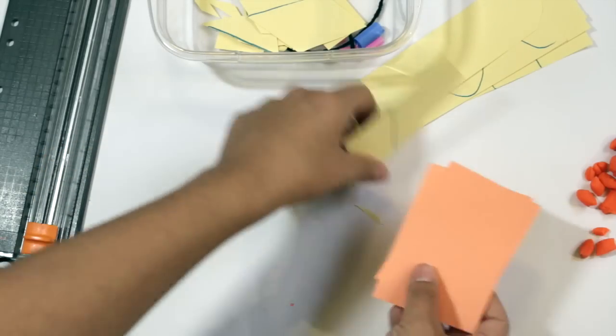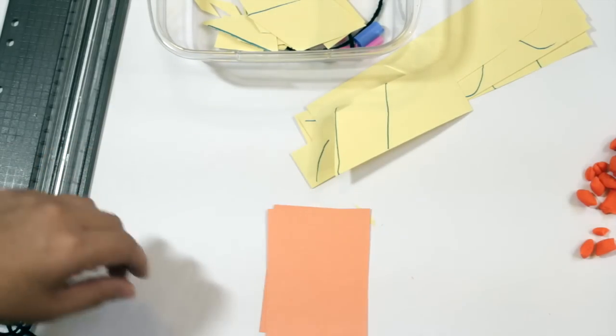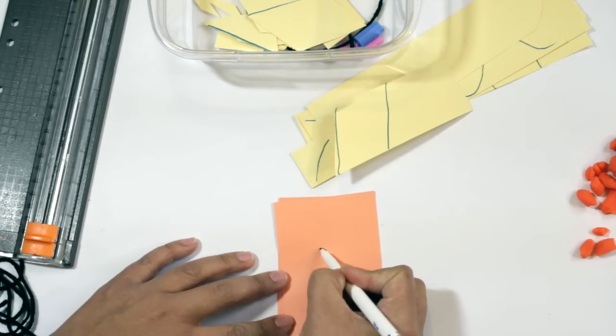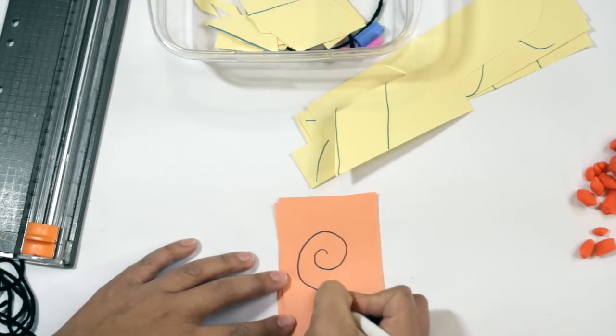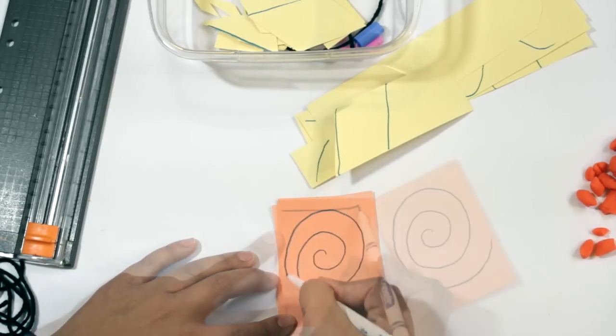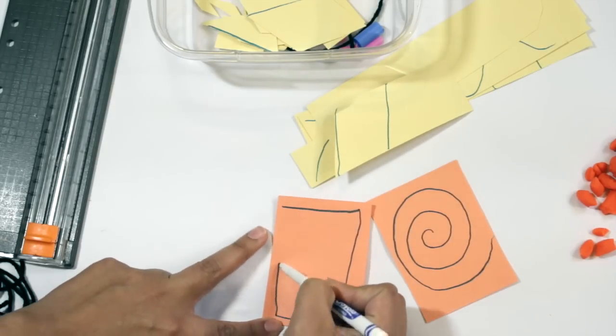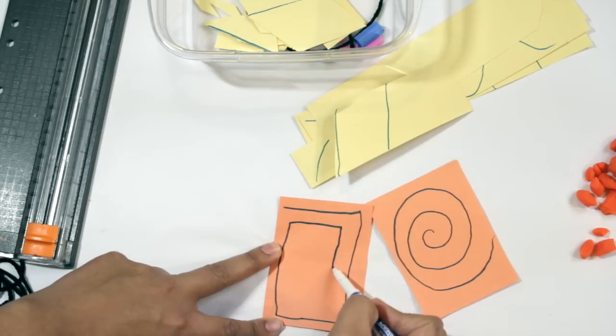You can try different shapes of paper such as this and do a spiral. A square spiral. Excuse my drawing is not up to par for this.